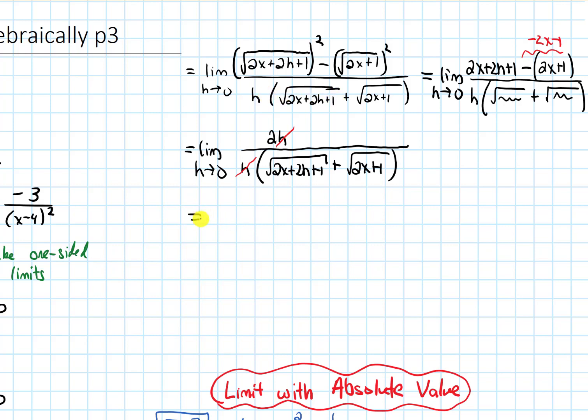So now that that h is canceled, now let's try plugging in. So we get the limit. Well, actually first, let's just simplify this. When I cancel the h, I'll get 2 over that square root of 2x plus 2h plus 1 plus the square root of 2x plus 1.